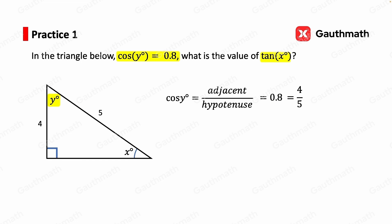Tangent x is equal to opposite over adjacent. We have the opposite already, which is 4. We can compute the adjacent side using the Pythagorean theorem: 4 squared plus the unknown squared equals 5 squared.